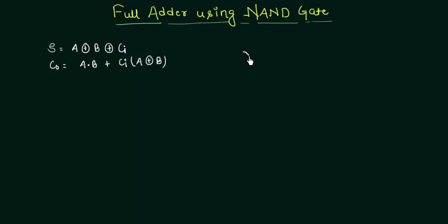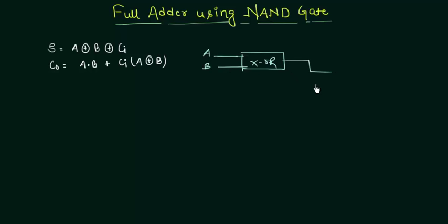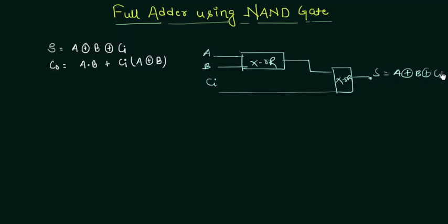What I am saying is that we require one XOR gate with inputs A and B, then whatever its output we will give it to another XOR gate, and the second input is CI. So the output will be A XOR B XOR CI — very simple. We will implement this XOR gate by using NAND gates, so let's do it.